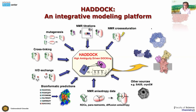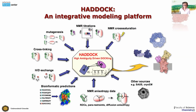We started from NMR data pinpointing the binding sites on the surface of proteins and moved to biochemical data, cross-linking data, HD exchange, bioinformatics, and even cryo-EM and small angle X-ray scattering. HADDOCK has since the early days been able to model complexes consisting of more than two molecules. Many assemblies have multiple components of various types: protein, nucleic acid, small molecule, oligosaccharides — HADDOCK can handle all of those.